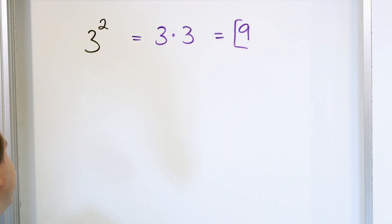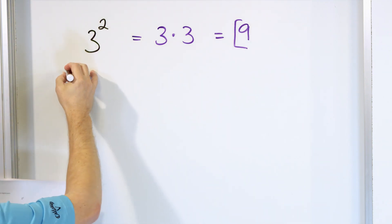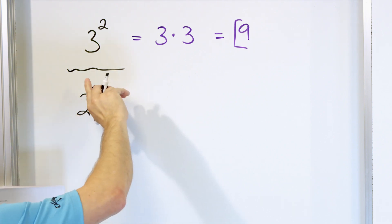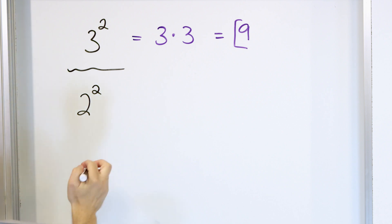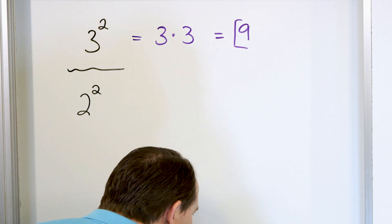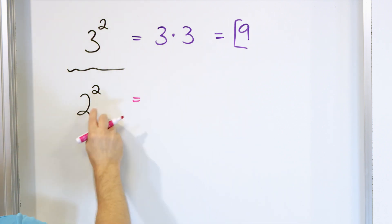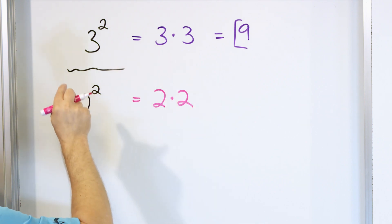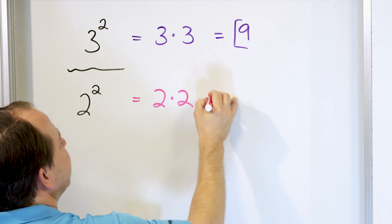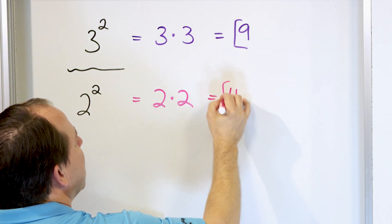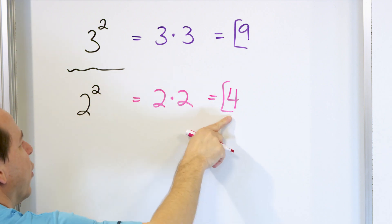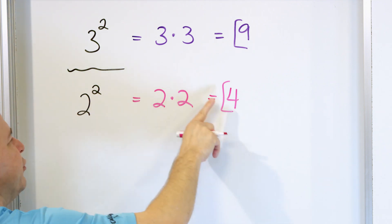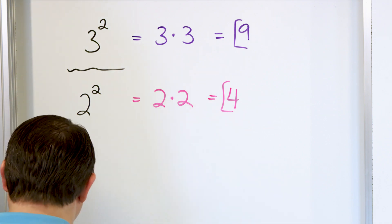Let's get some more practice and look at additional examples. What about 2 to the power of 2, or 2 to the exponent of 2? We can also call it 2 squared. What we do is take the bottom number and multiply it by itself. We have two of them because the exponent is a 2. 2 times 2 is 4. So we say 2 squared is 4, or 2 to the power of 2 is 4, or 2 to the exponent of 2 is 4. All of those mean exactly the same thing.